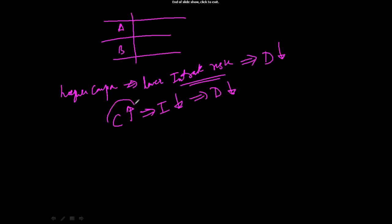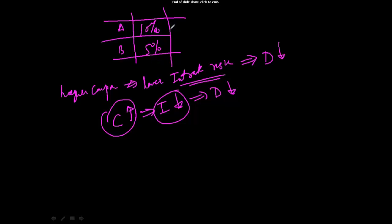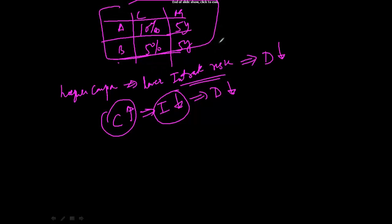Why would a bond having a higher coupon have lower interest rate risk? Let's say there are two bonds — one is a 10% coupon, another is a 5% coupon — and the maturity for both of them is 5 years. The coupon of bond B is lower and bond A is higher. So if somebody asks which bond will have a higher duration, the answer should be B.